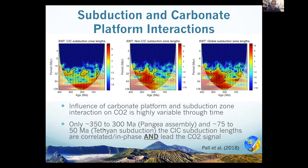The take-home message was that during the assembly of Pangea, between 350 and 300 million years ago, and between 75 and 50 million years ago during the Tethyan subduction and the collision of India and Eurasia, these carbonate-intersecting continental arcs are correlated and in phase with CO2, and actually slightly lead the CO2 signal. That's the real power of these numerical approaches — it's not just looking at peaks and troughs in a time series.